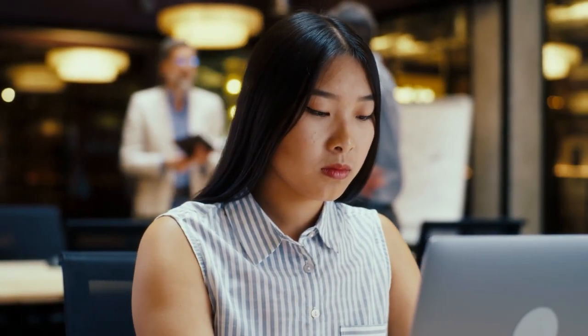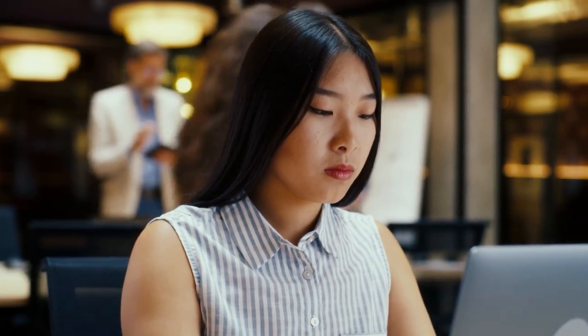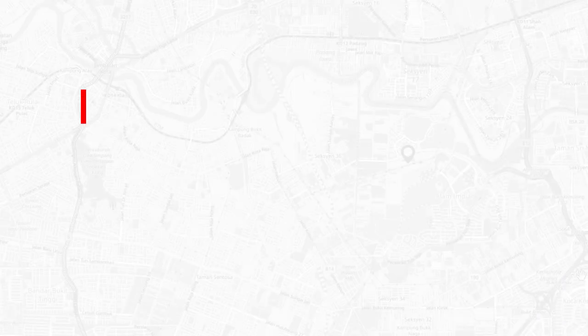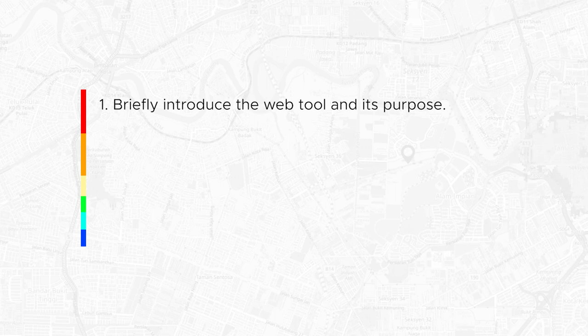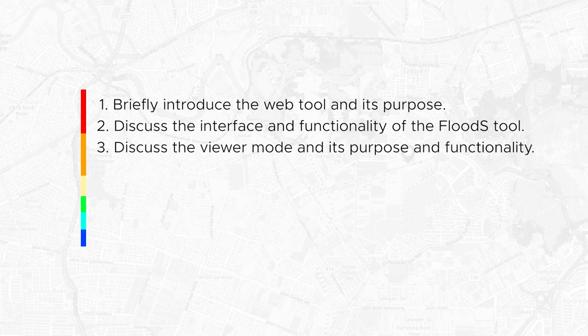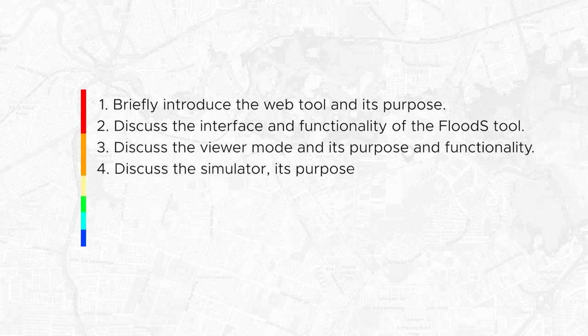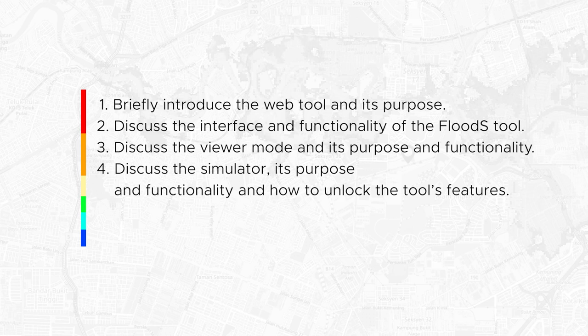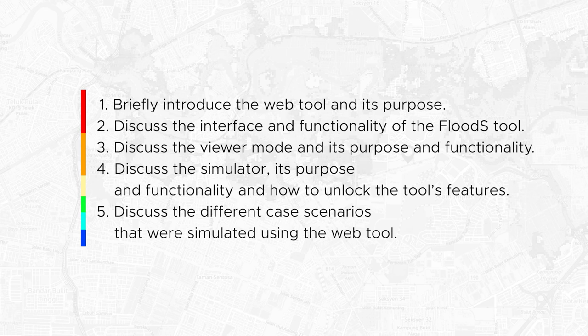This second module of the e-learning series will introduce the operation of the Flood S Tool, which can help the local community establish resilient responses to deadly flooding. Specifically, it aims to: 1. Briefly introduce the web tool and its purpose. 2. Discuss the interface and functionality of the Flood S Tool. 3. Discuss the viewer mode and its purpose and functionality. 4. Discuss the simulator, its purpose, functionality, and how to unlock the tool's features. 5. Discuss the different case scenarios simulated using the web tool.